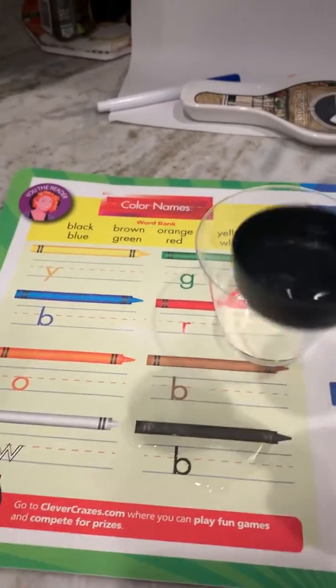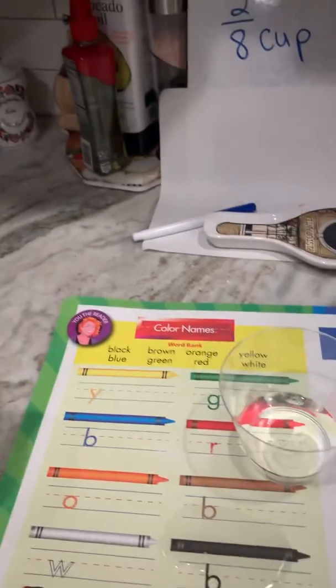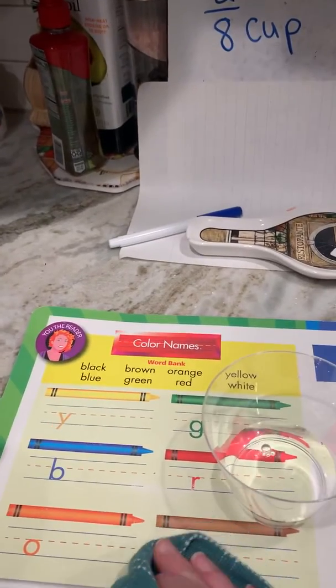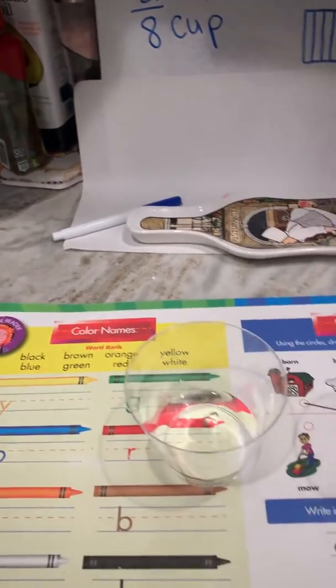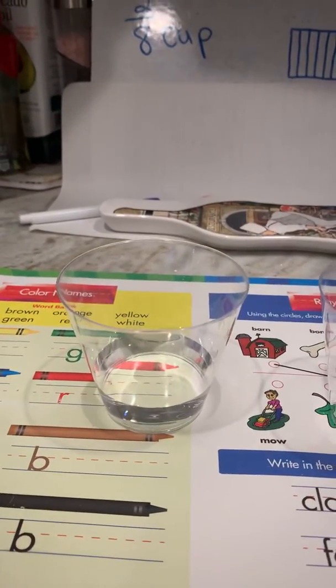Now, if I knew right off the bat that simplifying two eighths would get me the same fraction, but just showing it a different way, it would make it easier for me to do the recipe.